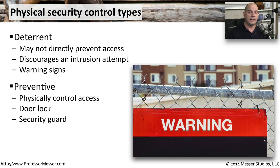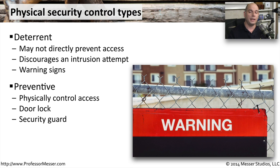Another physical security control is the preventive control type. In this case, we are going to prevent somebody from gaining access to a room. We might have a door lock that's always going to be locked — you only gain access if you happen to have the key. Or maybe it's something like a security guard who's going to check a list and only allow the correct people to enter that particular area.